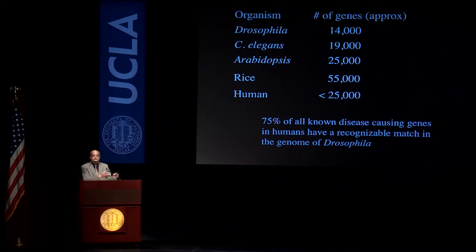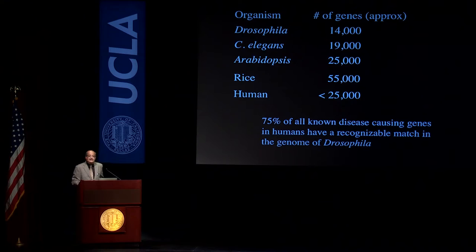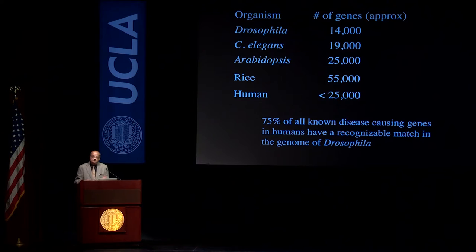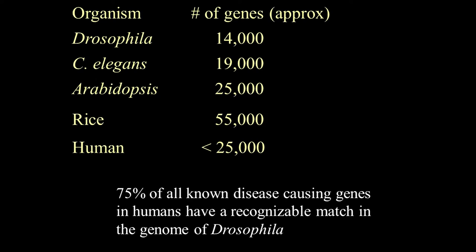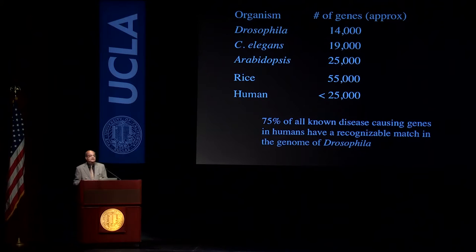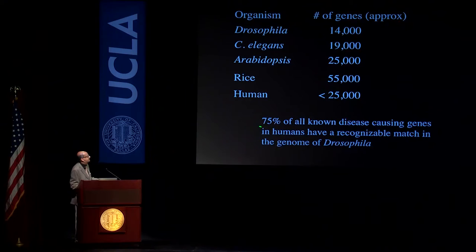If you wanted to build the Taj Mahal or a shed in the backyard, you would go to Home Depot and buy the ingredients. It's how complicated you make those ingredients and how you fit them together. As a result, 75% — and I think the number is now higher — of known disease genes in humans have a recognizable match in the genome of Drosophila.